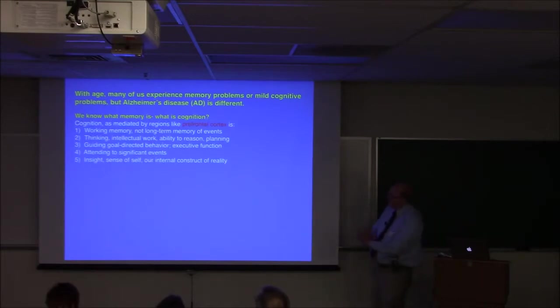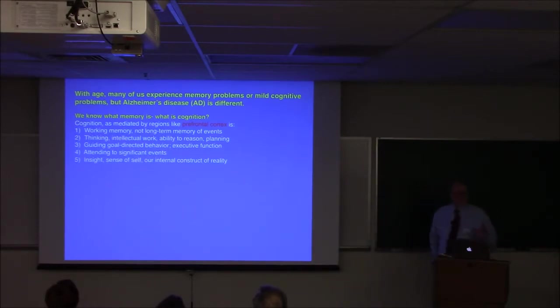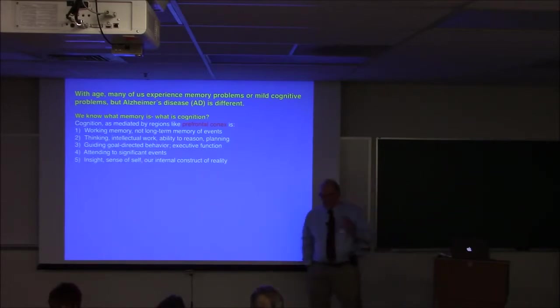So, we'll get right now into the distinction between Alzheimer's disease and cognitive aging. So, many of us will experience memory problems and mild cognitive problems as we age. Not all of us, and not at the same rate. You have people that are 90 years old that are performing like 35-year-olds. So, it's highly variable. But Alzheimer's disease is different. Let's first define cognition. We have a really good intuitive sense of what memory is. And one of the key brain structures that mediates memory is the hippocampus. And I'm sure you've probably read about that. But cognition is a little bit more difficult to get an intuitive feel for. And it's regions like the prefrontal cortex that are critically important for cognition. And here are some of the functions. And these will be very familiar to you. Working memory. Not the memory of events, but working memory.